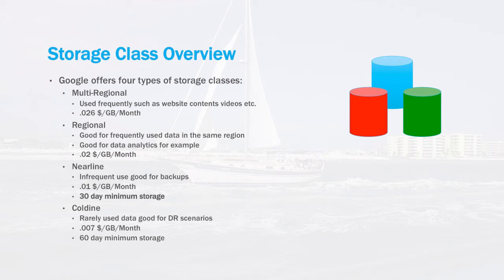Regional storage is a good scenario for data analytics, for example, that's only utilized in one region and not being served across multiple regions worldwide. It's priced at $0.02 per gigabyte per month. Next is nearline storage, which is really for infrequent use. It has a 30-day minimum storage requirement but costs only half as much as regional storage, at $0.01 per gigabyte per month.